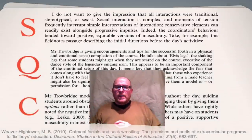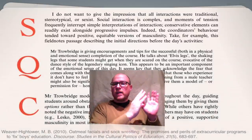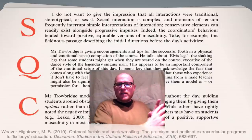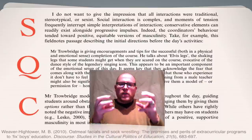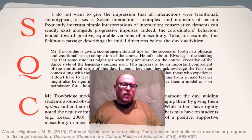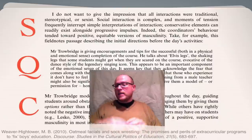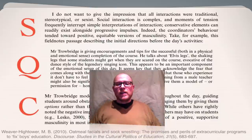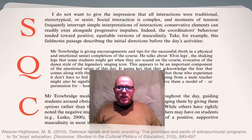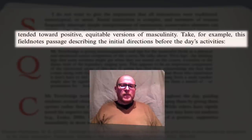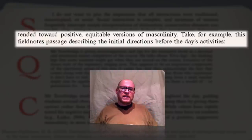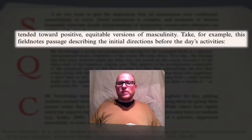You can see in this setup passage that I'm setting up several things. First, I'm responding to things that happened earlier by saying I don't want to give the impression that all interactions were traditional. That's clearly talking about something that's already happened. But then I move on to the thesis: 'Social interaction is complex. Conservative elements can readily exist alongside progressive impulses.' That's my thesis for this paragraph. Then notice the sentence right before the quotation — 'Take, for example, this field notes passage' — which gives context for what's about to come up.